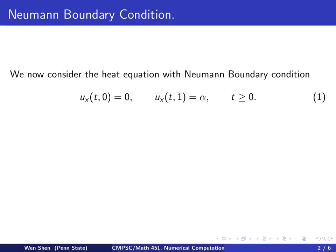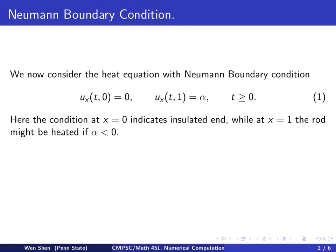Now, at x equal to 1, we have a boundary condition, say, u sub x equals to a constant alpha. That would mean that you are heating the rod at the end or cooling it at the end and causing a heat flow going through. So to summarize, at x equal to 0, the rod is insulated. And at x equal to 1, it's being heated if alpha is less than 1 or being cooled if alpha is greater than 1.